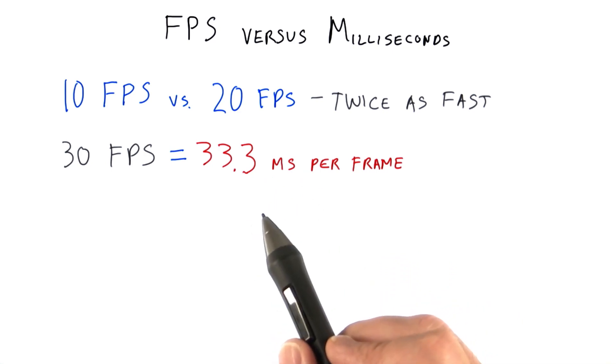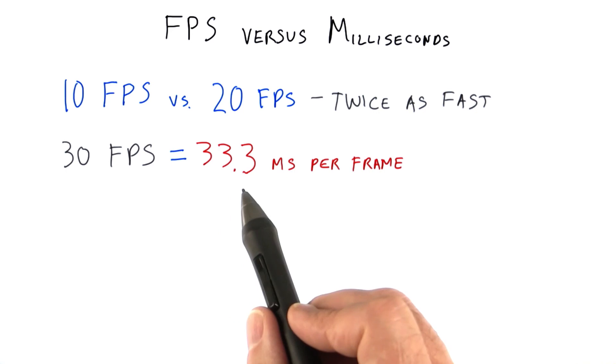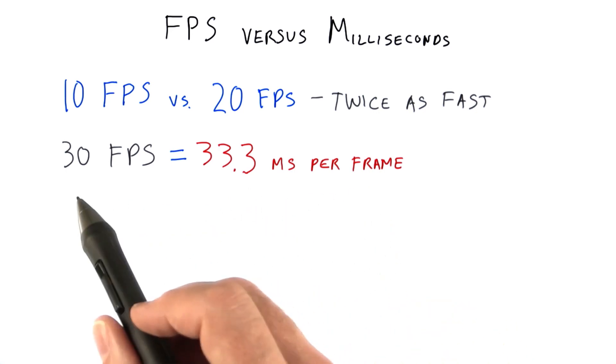Games, for example, will often have a budget of 33.3 milliseconds per frame, which means 30 frames per second.